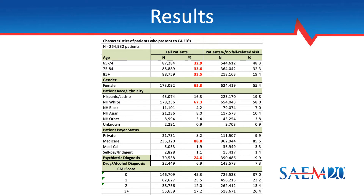Here we have a table of the characteristics of patients who presented to California EDs. The first column shows our fall patients, and the second column shows patients who presented for a non-fall-related visit as a comparison. Focusing on the bolded red figures: patient ages were similar across age groups, the majority of fall patients were female, the majority identified as non-Hispanic white, they paid with Medicare, and a greater proportion of the fall patients had a psychiatric diagnosis.